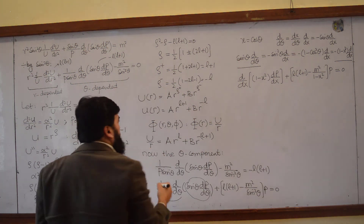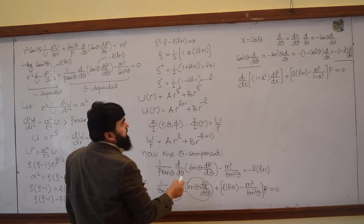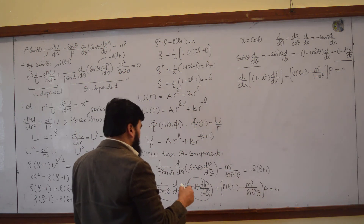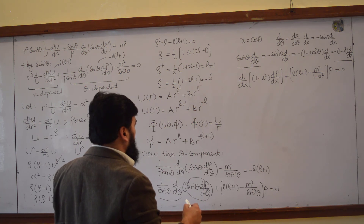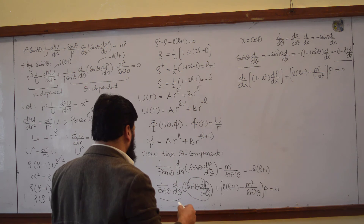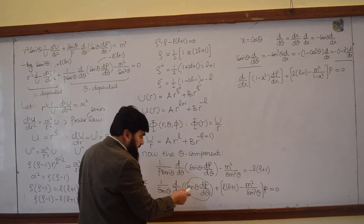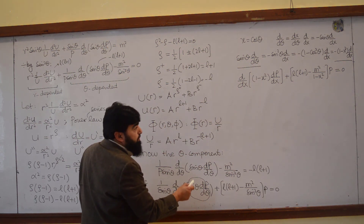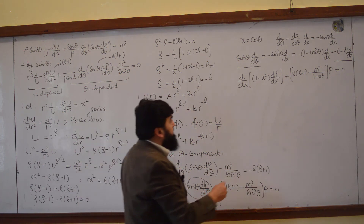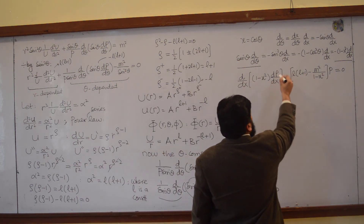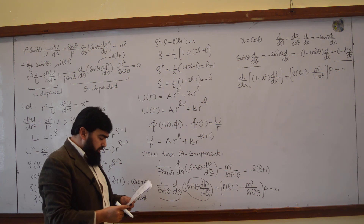We have changed the shape of the equation, but it is still hard to solve because both m and l are unknown. So we now consider the case where the potential is azimuthally symmetric.